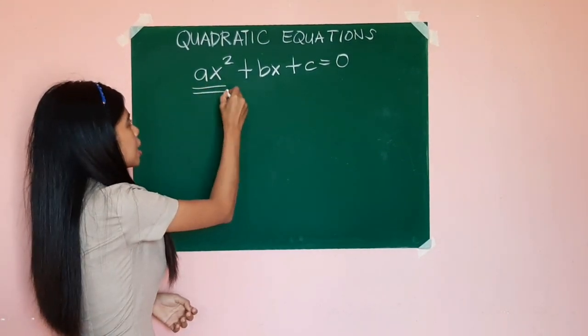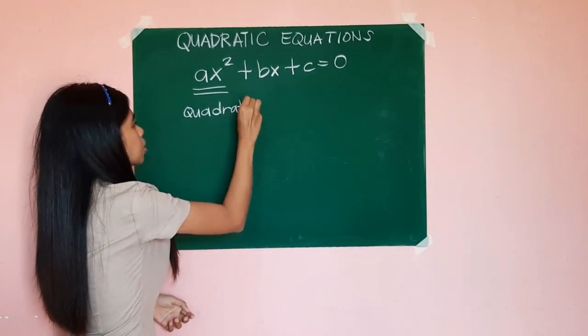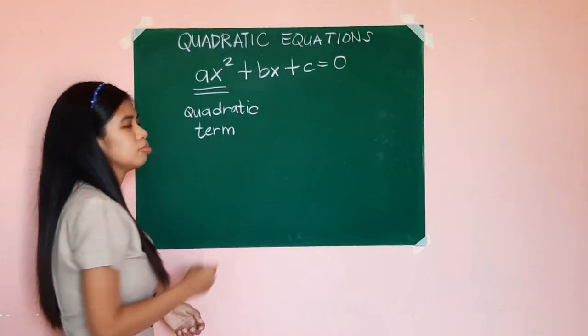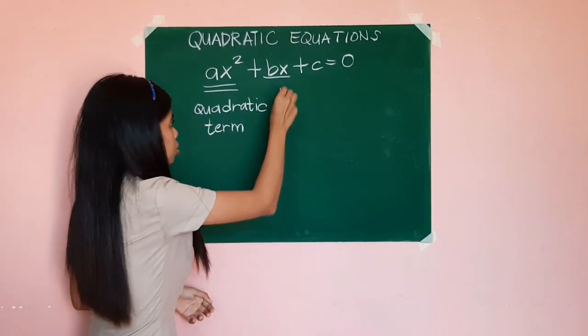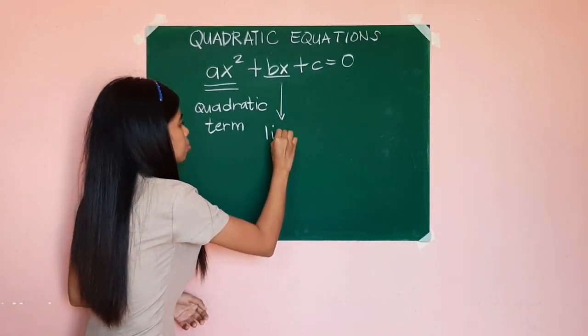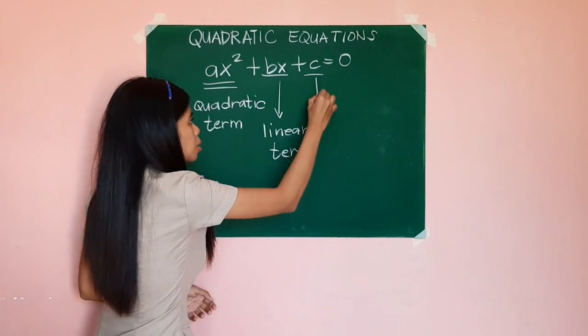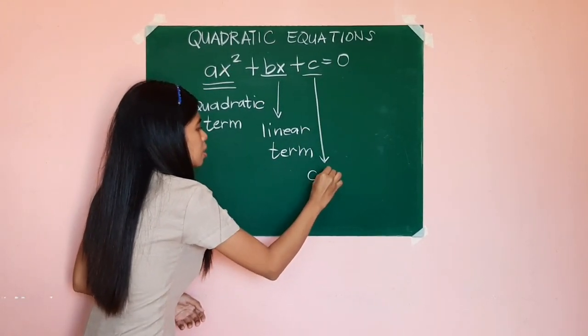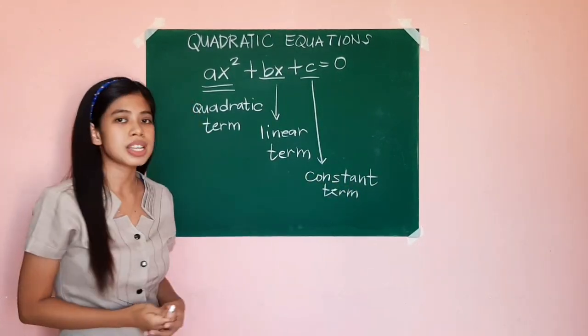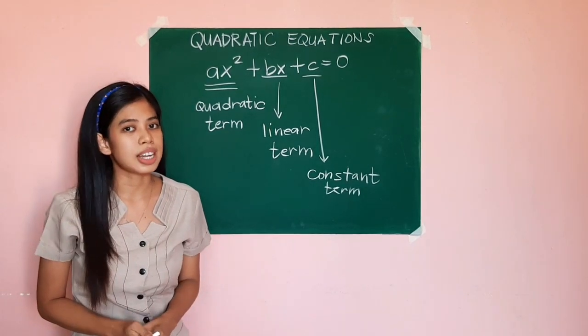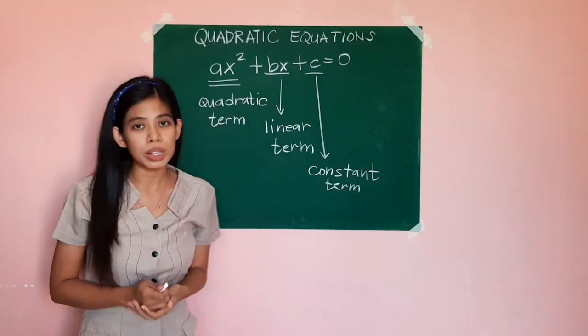This term ax² can be named as the quadratic term. This term with x as the variable and 1 as the exponent can be called the linear term. And this constant term will always have a value of a constant. Take note, since we are talking about quadratic equations, we must always have an equal sign as the symbol.